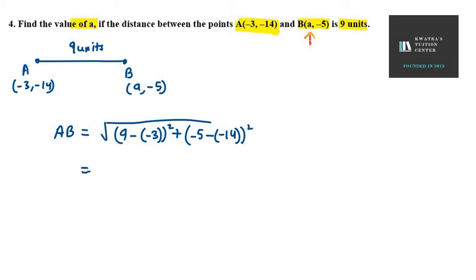So here you get 9 minus (-3). Wait, sorry, this is not 9, this is A. So A minus (-3). So this will be (A + 3) whole square. Then you get -5 + 14. So you get 9 square.